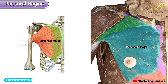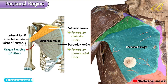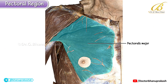The muscle fibers converge to form a flat tendon which is inserted into the lateral lip of the intertubercular sulcus of the humerus. This tendon has two laminae: the anterior lamina is formed by the clavicular fibers, and the posterior lamina is formed by the sternocostal fibers. These laminae are continuous inferiorly, and during their insertion the fibers twist such that the lowest fibers attach at the highest point. This unique twisting of fibers gives rise to the rounded anterior axillary fold, a key surface landmark.